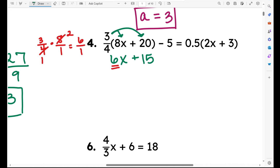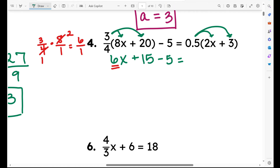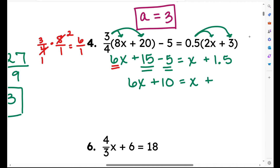Then I subtract 5 — I'm just rewriting this. Now I'm going to distribute 0.5 (one half) into each term inside the right parentheses: 1 half times 2x is just x, and 1 half times 3 is 1.5. You can use the decimal 1.5 or the fraction 3 halves — it's just whatever you prefer. Now combining like terms on the left: positive 15 and negative 5 combine to give 6x plus 10 equals x plus 1.5.